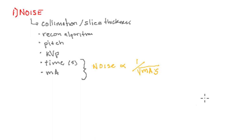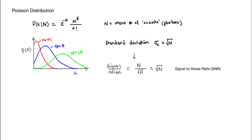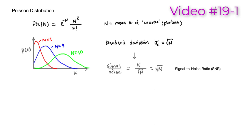The reason for that relationship is that mA times time affects the number of photons coming out, and that affects noise. Let's go back and remember what we learned in the last video, 19.1. We looked at the Poisson distribution and saw that the signal-to-noise ratio scales like the square root of the number of photons.